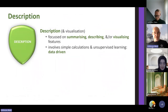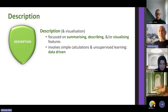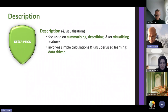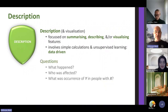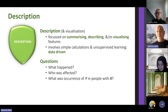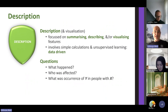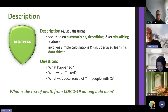It's important to draw the distinction out. Description is fairly self-explanatory and very important — especially for big data, using visualization tools to understand what's in the data. It's heavily data-driven. You can ask questions such as: what happened? Who was affected? What's the occurrence of one condition in people with another condition? A typical question might be: what is the risk of death from COVID-19 among bald men?